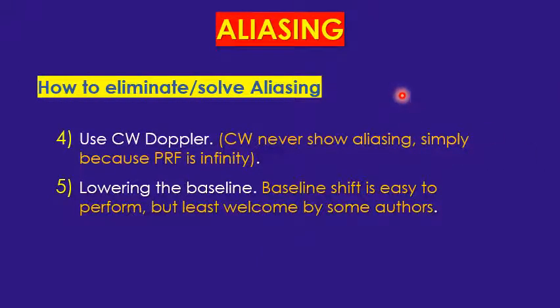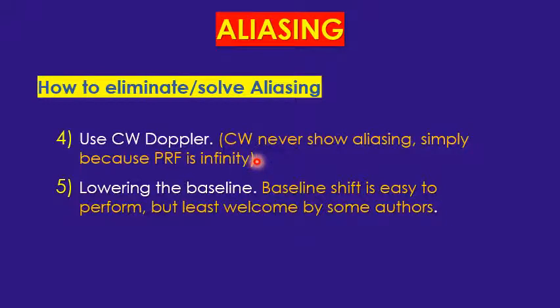Two more steps: switching to continuous wave (CW) — since CW never aliases, activating it from the console will eliminate the problem. Finally, lowering the baseline can help with minor aliasing, though this is not widely recommended by many authors.